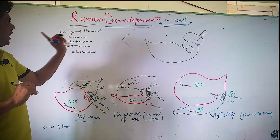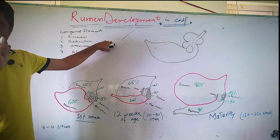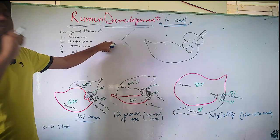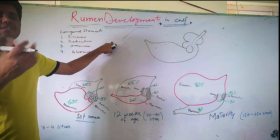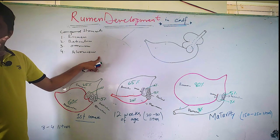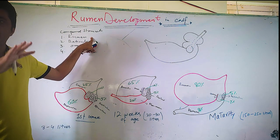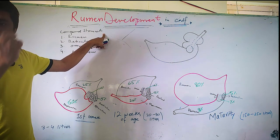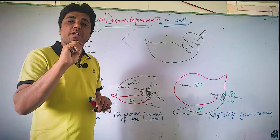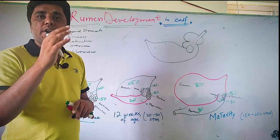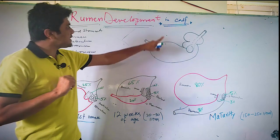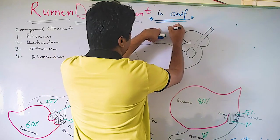A normal adult cow, dairy cow, or ruminant — whether large or small — has a compound stomach, also called a ruminant stomach, with four chambers: rumen, reticulum, omasum, and abomasum. The rumen is the main chamber, responsible for the fermentation of grass or cellulose with the help of microorganisms.